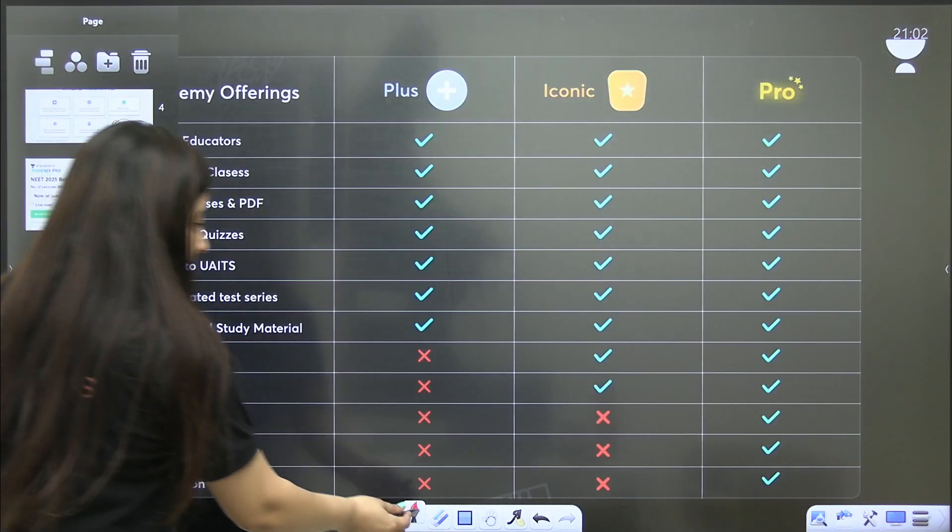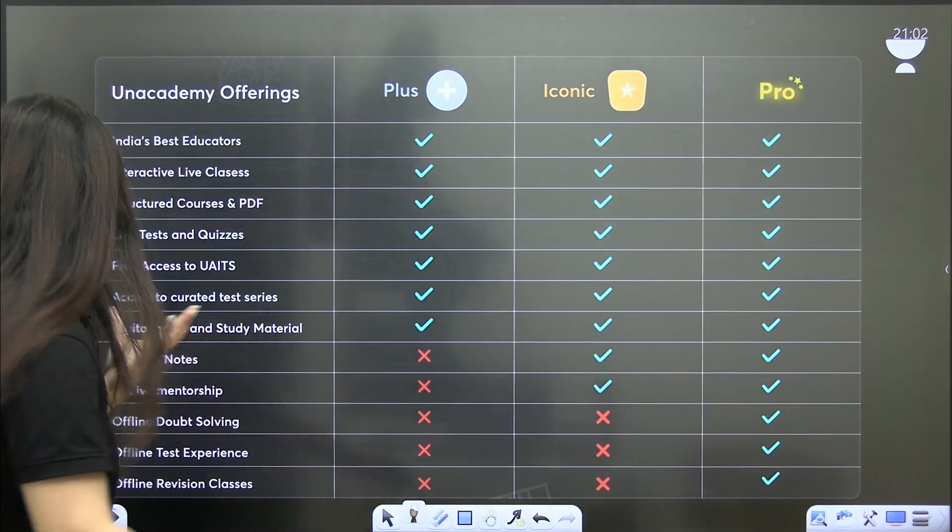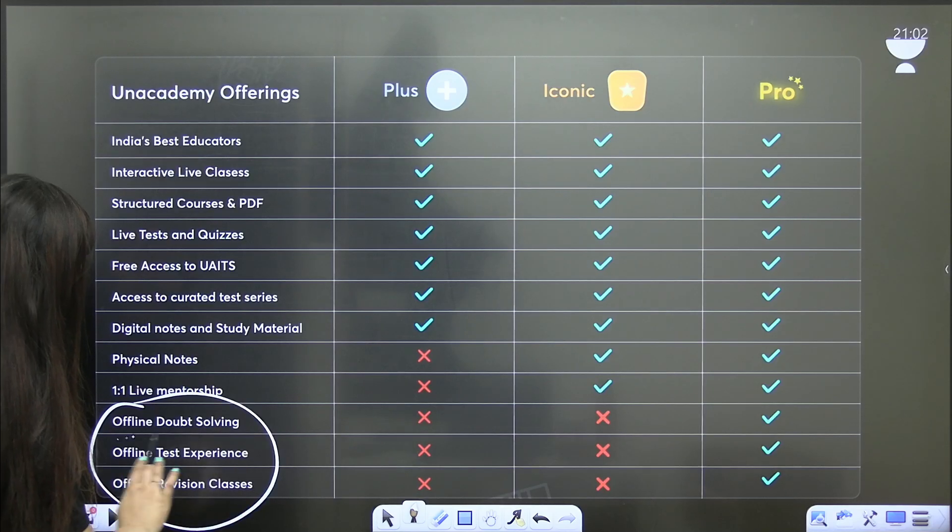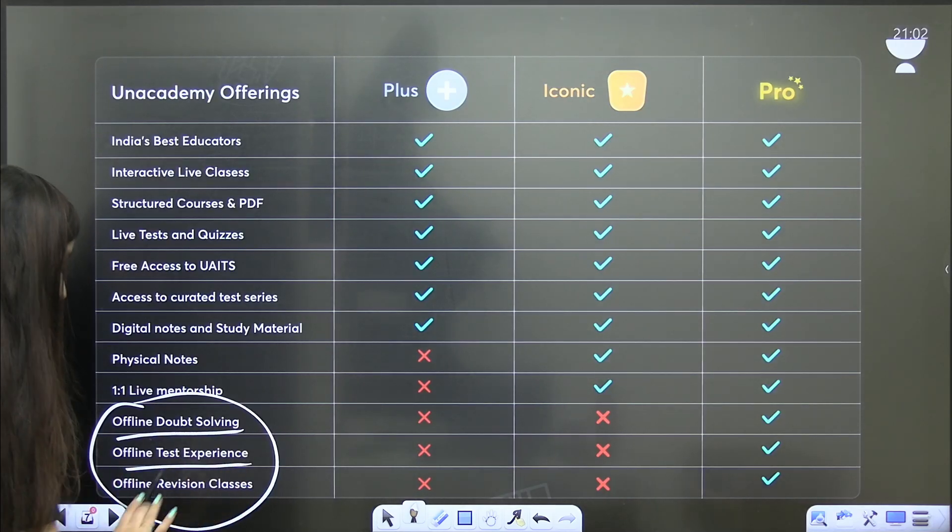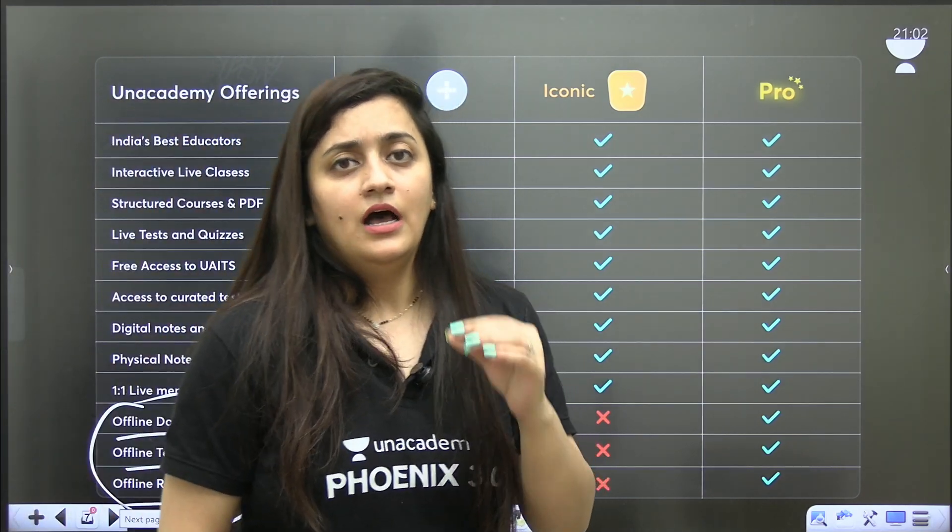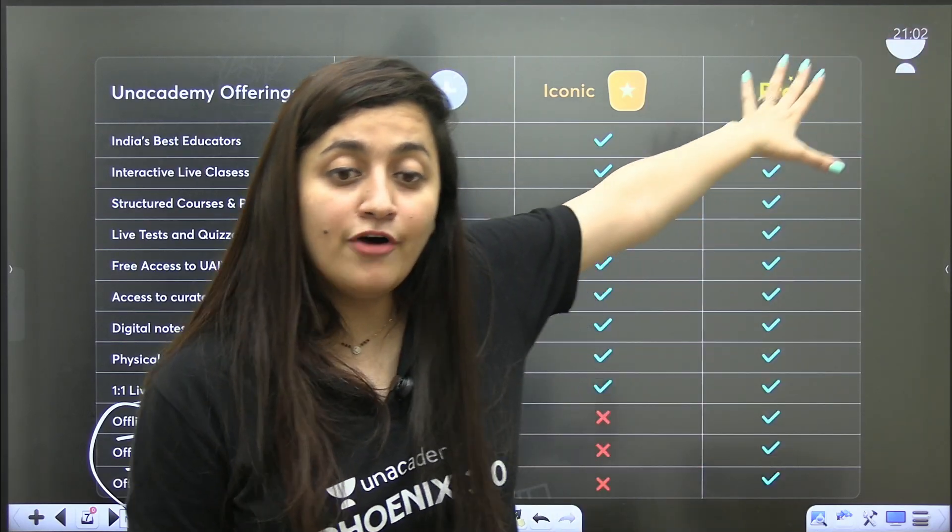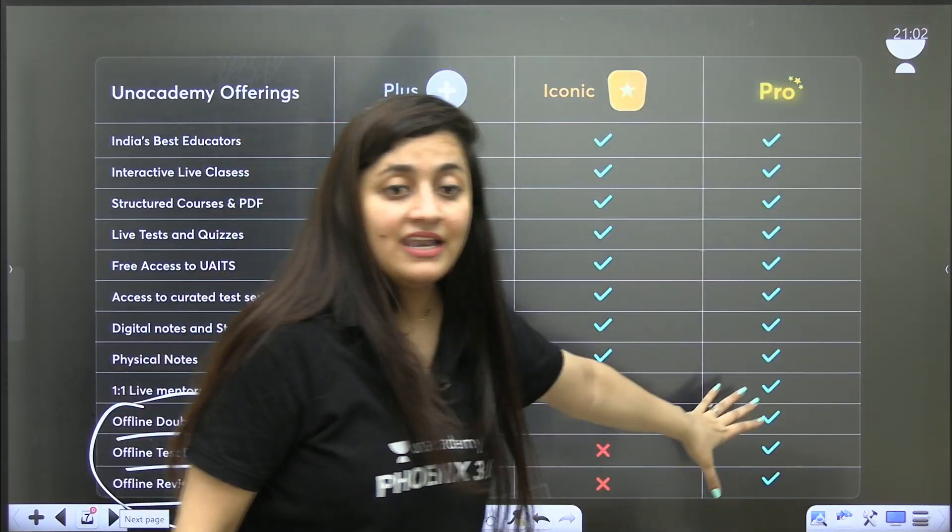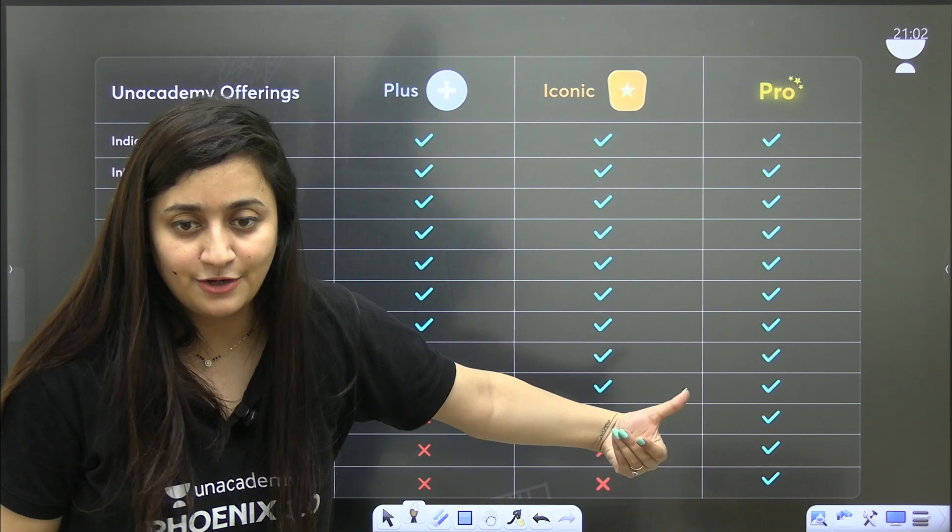In whatever city you are, if you go for Unacademy Pro along with the online benefits, these are the offline benefits that you people are going to get.